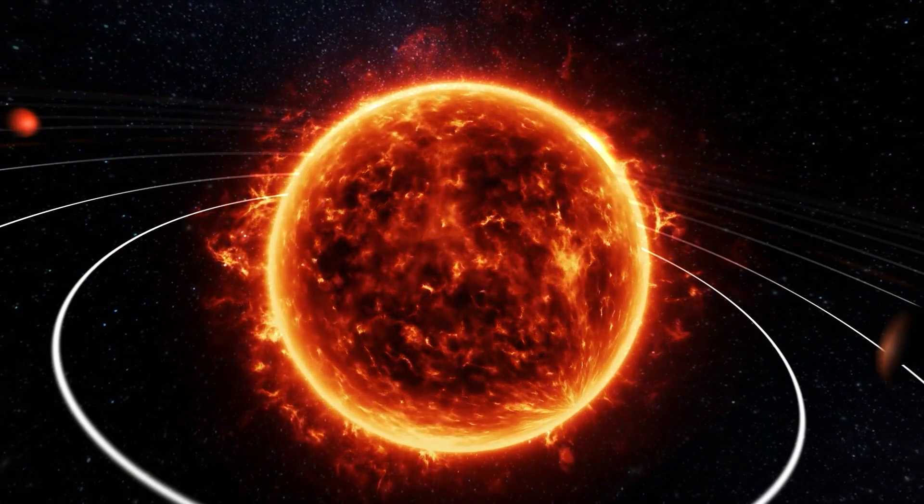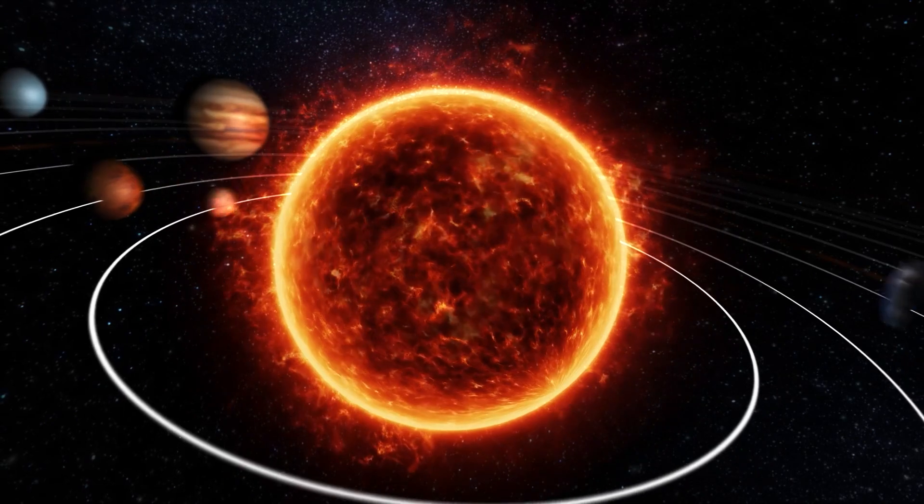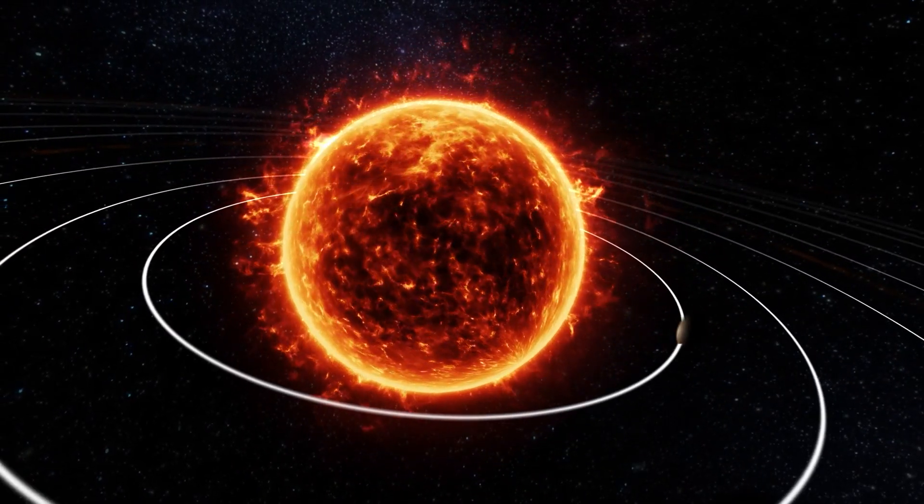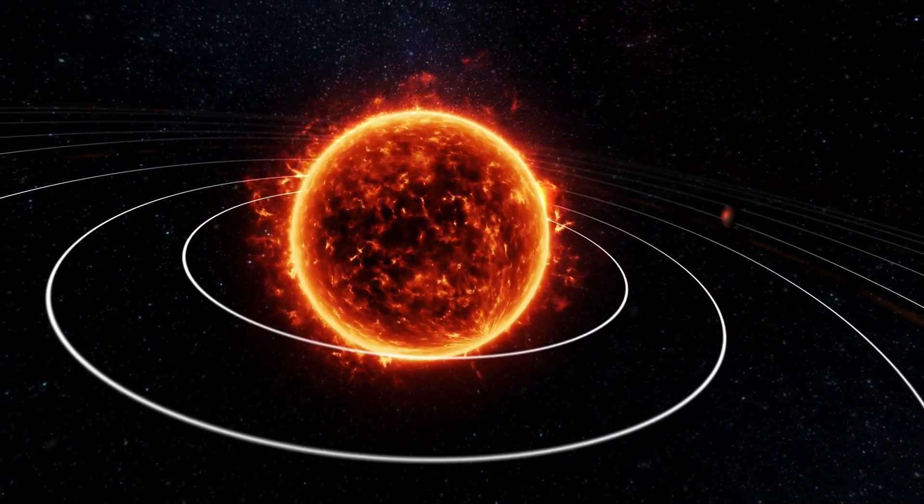So, after Galileo proved Copernicus's model of the solar system, we knew how the planets moved, but we still had no idea why.